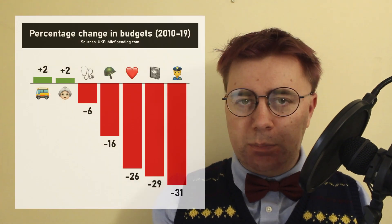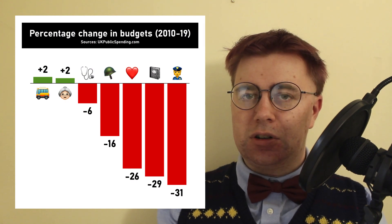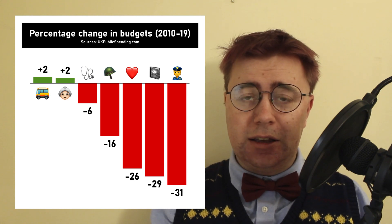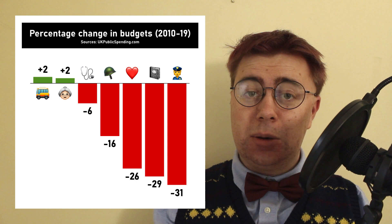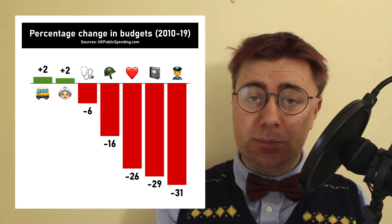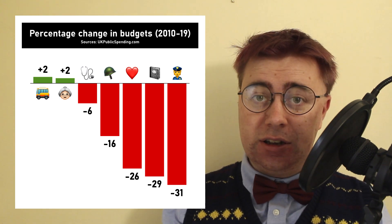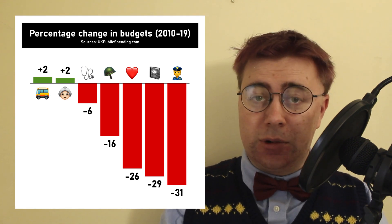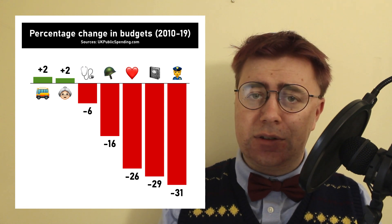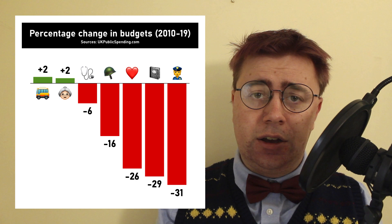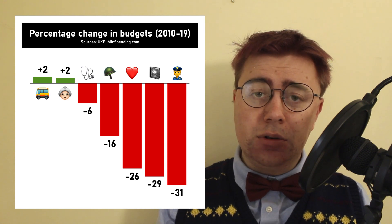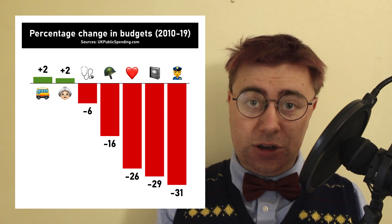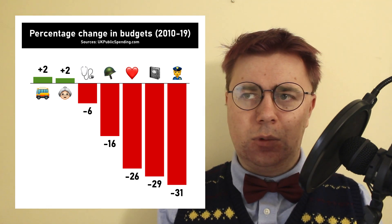If we look at which budgets took the biggest hit, the government's priorities become ever more apparent. The protection budget, which mainly encompasses police, fell by a whopping 31%. The education budget, 29%. The welfare budget, 26%. Even the defence budget took a hit. And in real terms — adjusted for inflation — the health service, before the COVID-19 crisis, took a 6% cut. The only two areas of public spending to see a net increase in real terms in those nine years was pensions and, weirdly, transport — which I say weirdly, because I haven't really noticed transport getting any better in those nine years.